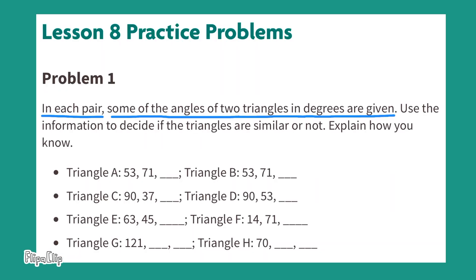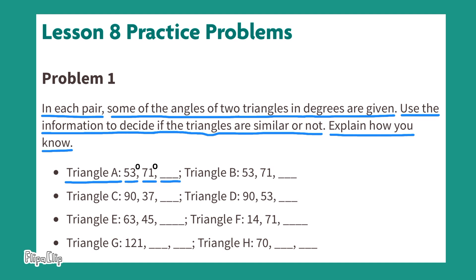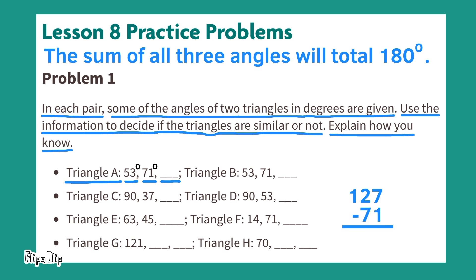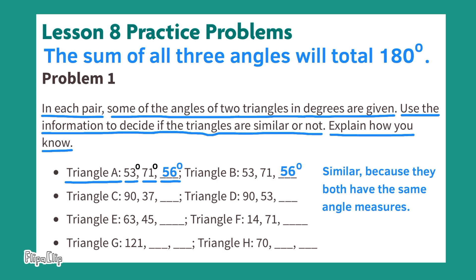Problem number one. In each pair, some of the angles of two triangles in degrees are given. Use the information to decide if the triangles are similar or not, and explain how you know. Triangle A has angles 53 degrees, 71 degrees, and an unknown angle. Since angles sum to 180 degrees, the unknown angle is 180 minus 53 minus 71, which equals 56 degrees. Triangle B also has the same angle measures. These triangles are similar because they have the same angle measures.